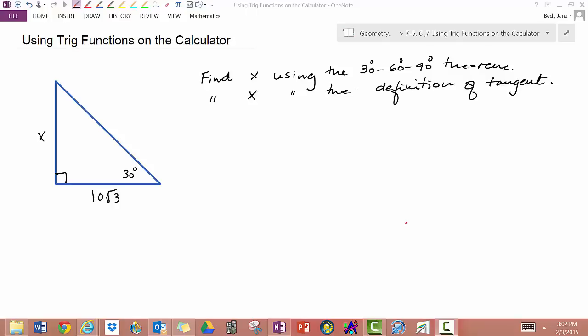So let's go ahead and see how we would solve this problem. We have a 30, 60, 90 triangle here. The side opposite 30 degrees is x, so this is opposite. This is the hypotenuse and this is adjacent.